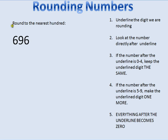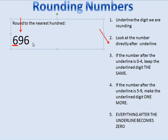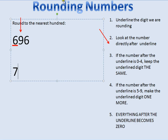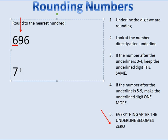Now we've got to pay attention — this one says round to the nearest hundred. Last time I was underlining the tens place, but this time it says hundred, so I have to underline the hundreds digit. I look at the number next to it — it's a nine, which is greater than five, so I take the underlined number and make it one more. Everything after the underline becomes zero.